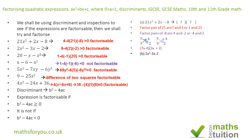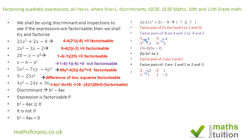For the next one, 2x squared minus 3x minus 2: the factor pair of 2 is 2 and 1. The factor pairs for minus 2 are minus 2 and 1, or 2 and minus 1. Trying 2 and 1 with minus 2 and 1: cross-multiplying gives 2 times 1 is 2, and 1 times minus 2 is minus 2, so 2 minus 2 gives 0 — no good. Trying with 2 and minus 1: 2 times minus 2 is minus 4, 1 times 1 is 1, giving minus 3 — that works.